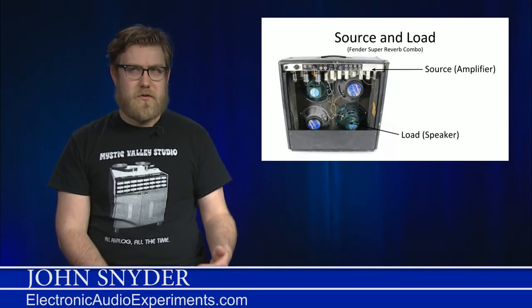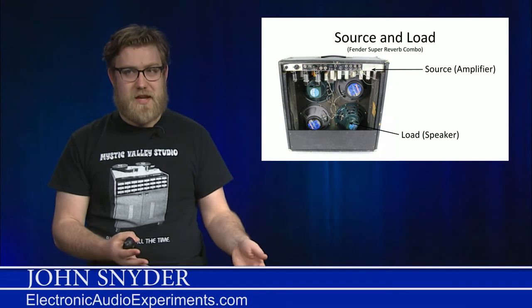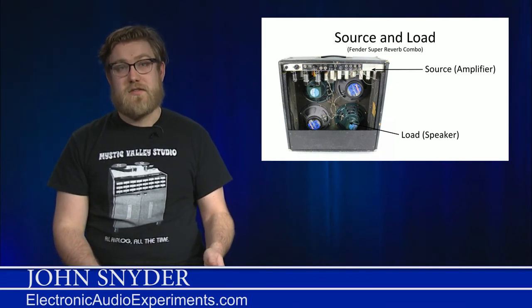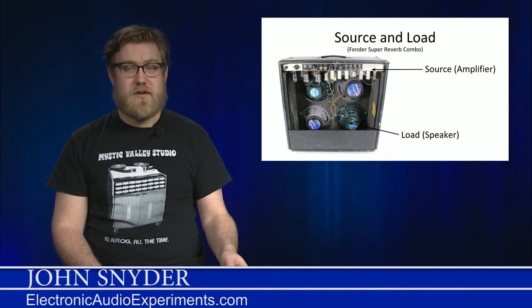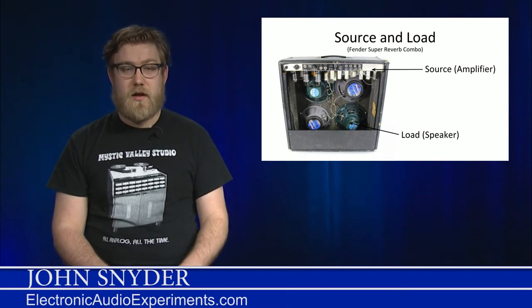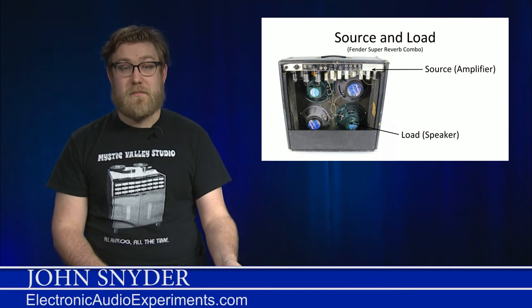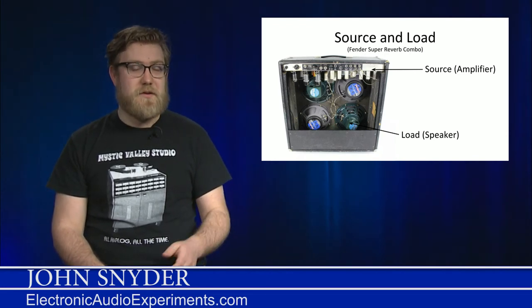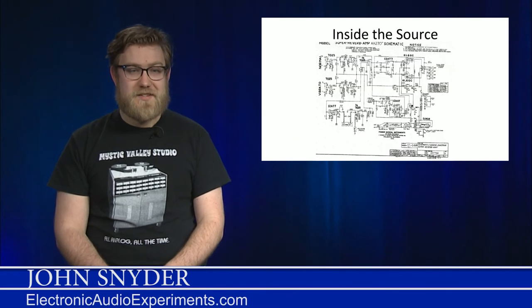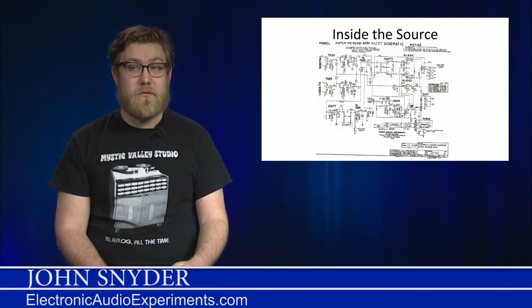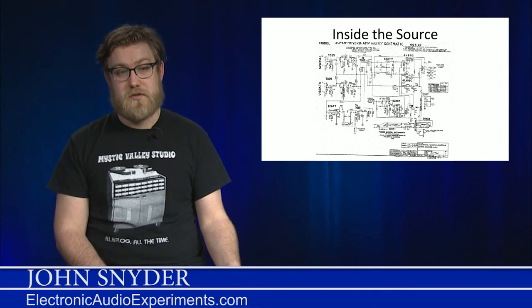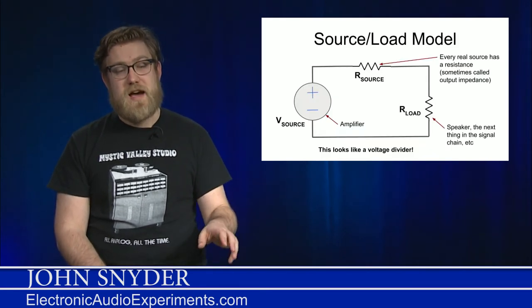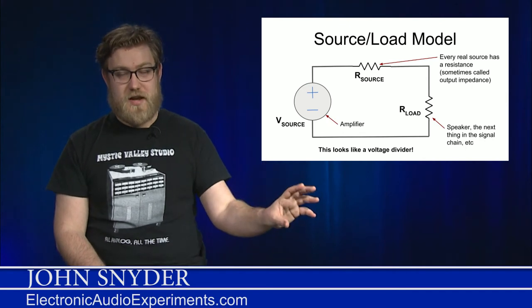When we talk about voltages and resistors, you can put them together on their own, but what's more interesting is if we use them to model something real. One such example is a combination of a source and a load. In here, we have a Fender amplifier where the source is the amplifier and the load is the speakers in the cabinet. Inside the source is something very complicated. Fortunately, we have the ability to model this as a simple voltage source.